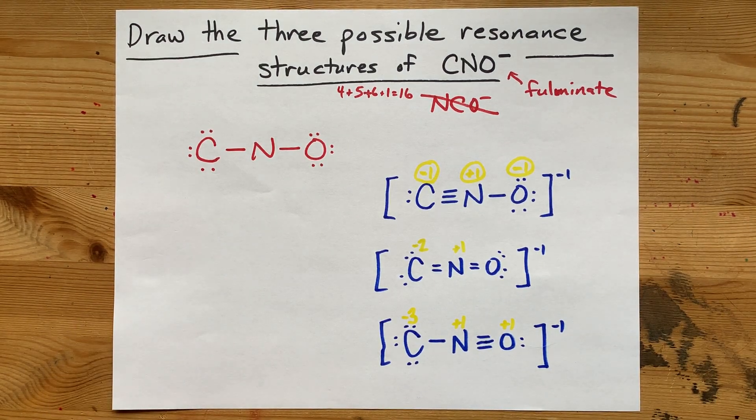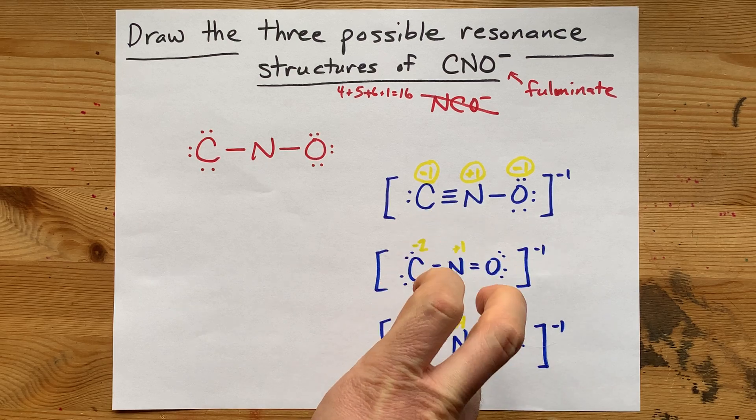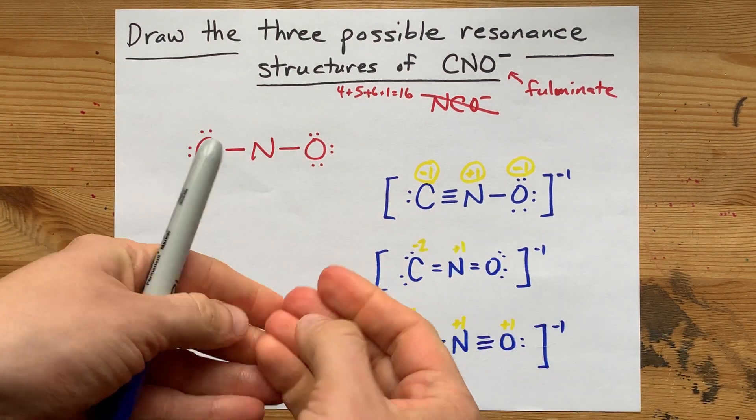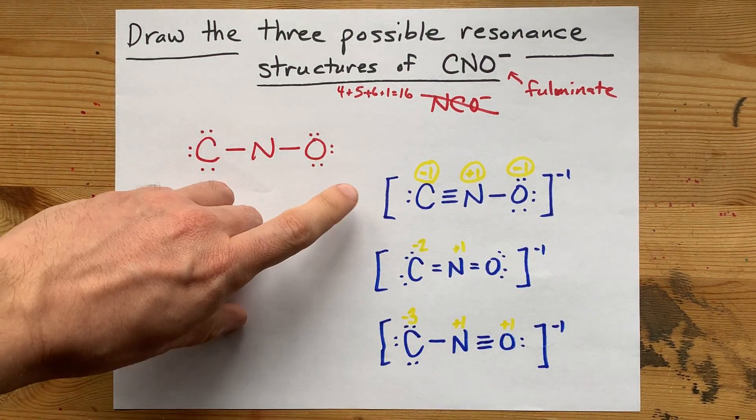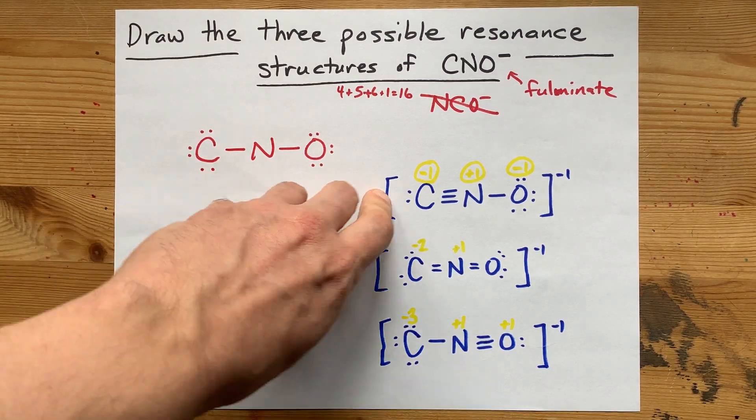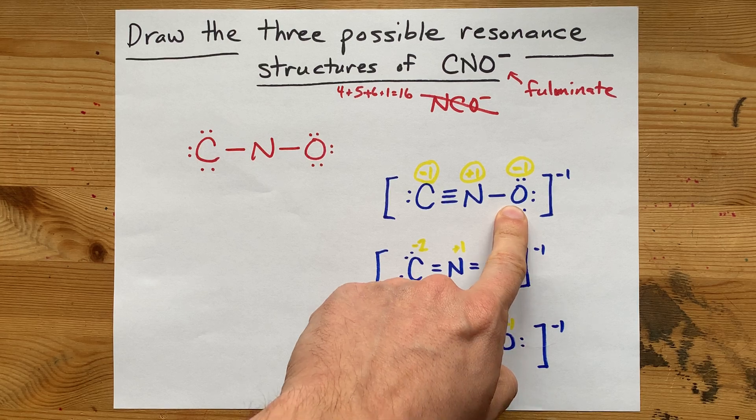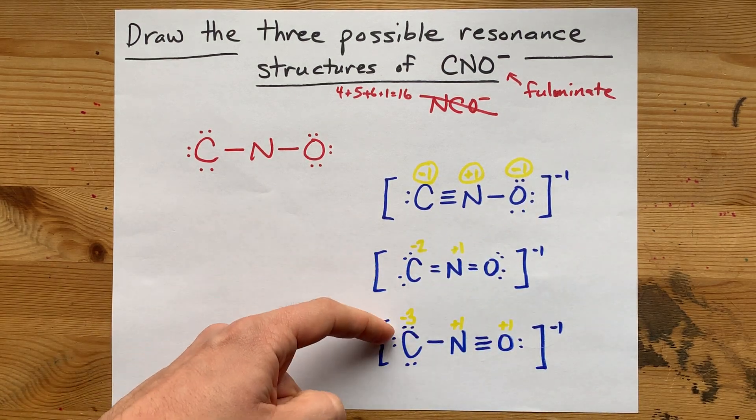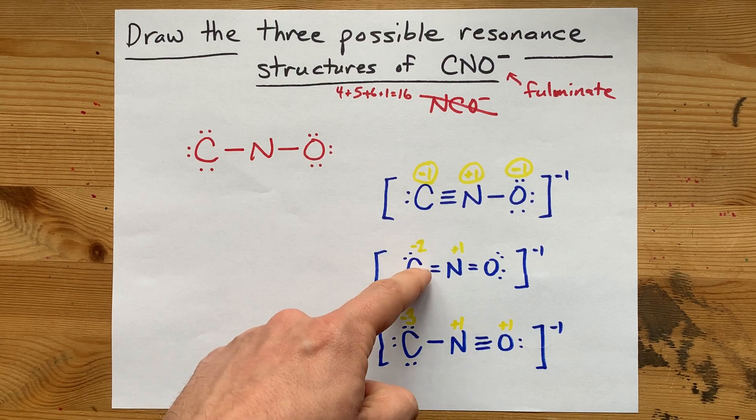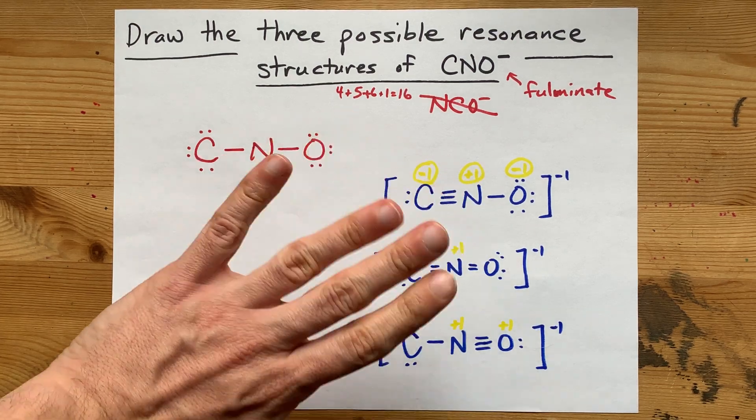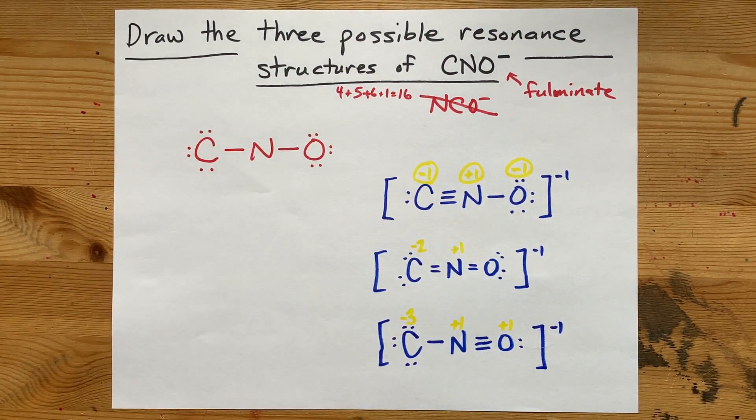All right, all right, all right. Now, which of these is most important or which one's the strongest contributor? Honestly, I would argue it's this one. You have a negative charge on the most electronegative atom, and all of the others have a stronger negative charge on the least electronegative atom. That doesn't sound like what should be happening here.